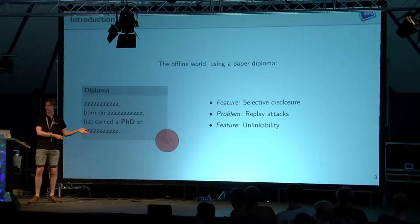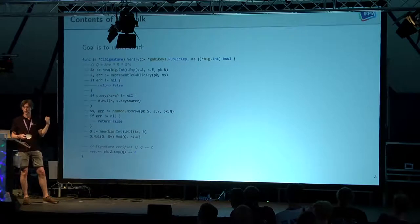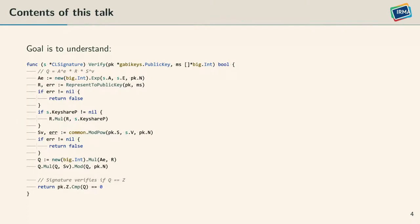Now we want to do all of this, but in the digital domain. The goal of this talk is basically to be able to understand this piece of code. This code comes from a software repository called Gabi, which you can find on GitHub — Gabi is our actual idemix implementation. This particular piece of code verifies a signature on an IRMA credential by verifying that a particular equation holds. This is the verification equation of an IRMA or idemix credential. If your credential and its signature satisfy that formula, then it is valid.